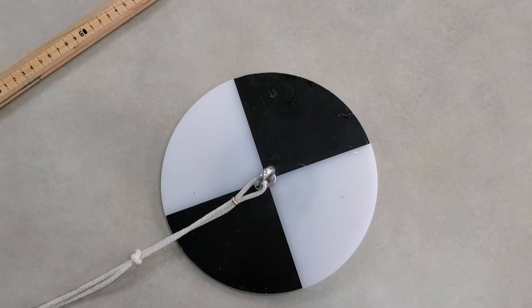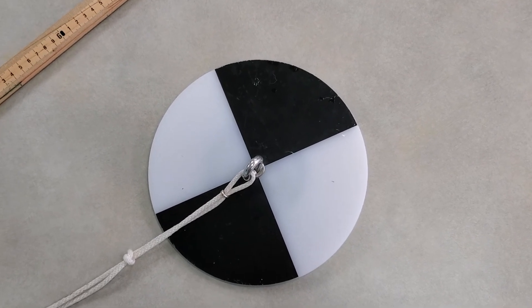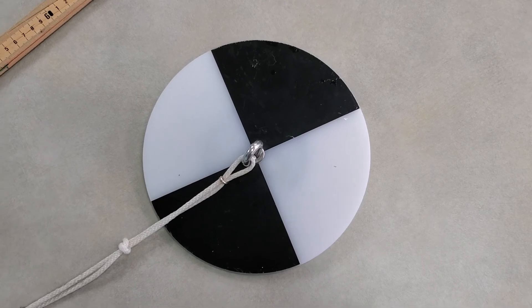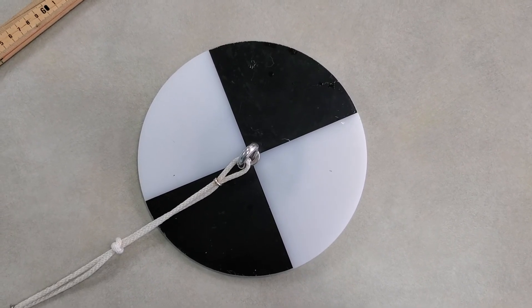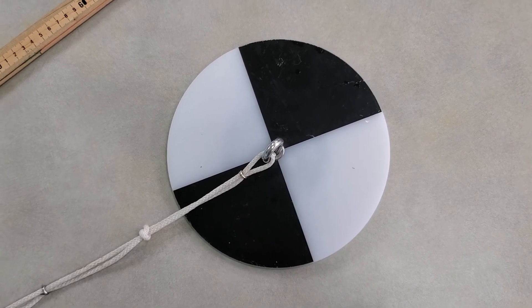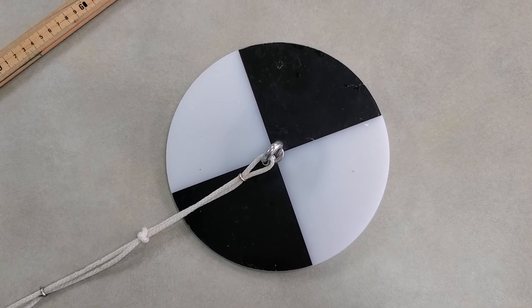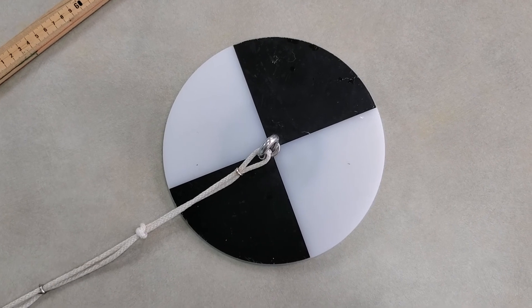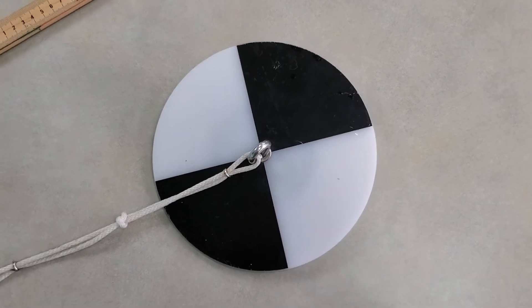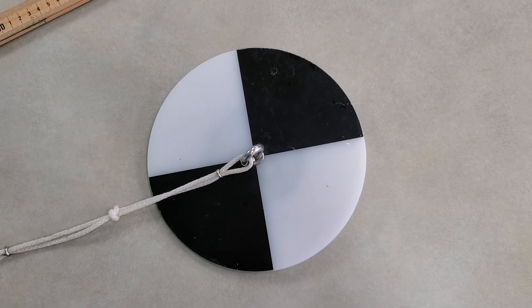Now, just the disc, though, gives us an idea of how far down we can see the disc, but light doesn't go into the water in a straight line. It actually bends. And so to account for that bending of light, we're going to have to take the value we measure and multiply it by 3 so that we get the true distance the light is traveling into the water.